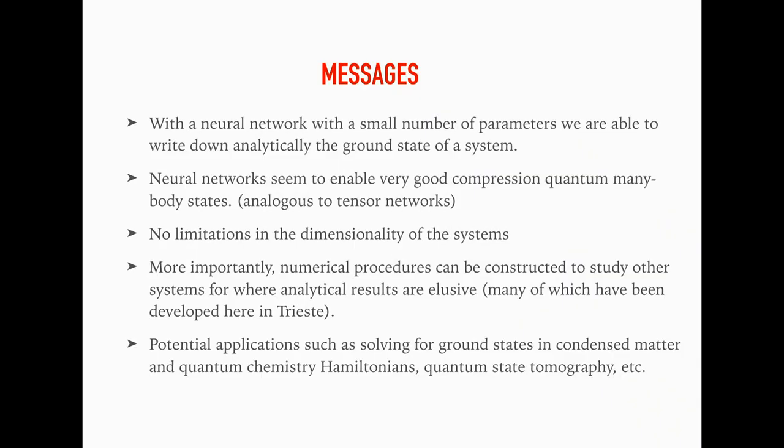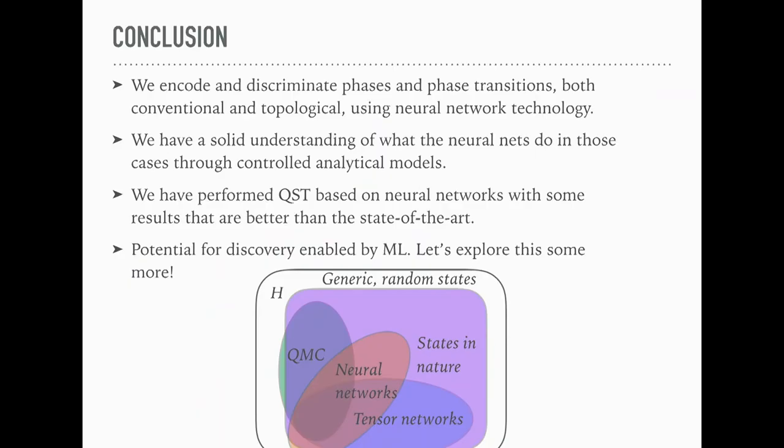Let me conclude. I won't be able to go through my second example. We encoded and discriminated phases and phase transitions, conventional and topological, using machine learning technology or neural network technology, and we understand those analytically, which is nice. We wrote down some ground states using neural networks, and this is using neural networks to do quantum state tomography. I'd like to invite everybody, because I think there's potential for discovery using machine learning and using it for physical problems. With that, I conclude. Thank you.